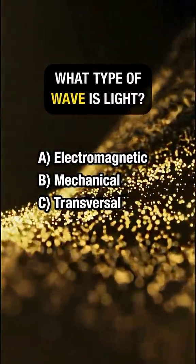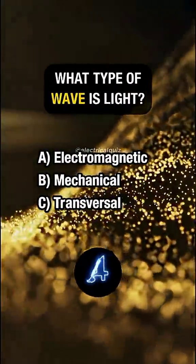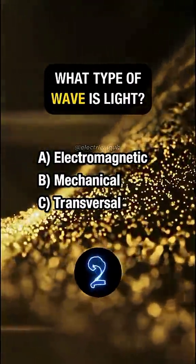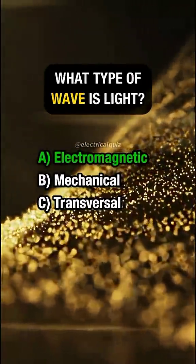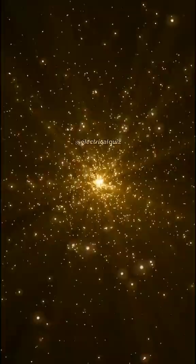What type of wave is light? Answer: A. Electromagnetic.